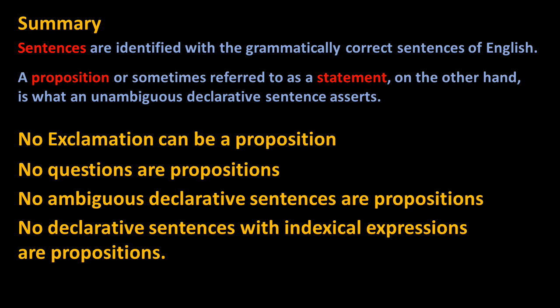There is a difference between sentences and propositions. Sentences are the grammatically correct utterances we issue in the English language. A proposition, or sometimes referred to as a statement, on the other hand, is what an unambiguous declarative sentence asserts. We also learned that no exclamations, like 'hi,' can be a proposition.